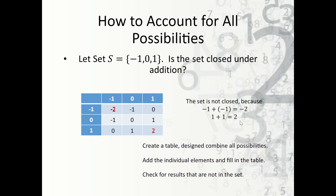Whenever we say that a set is not closed, we need to say why. The reason why this set is not closed is because of one plus one and negative one plus negative one.